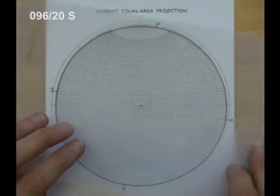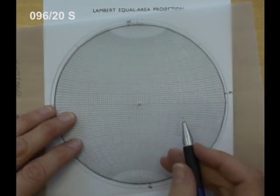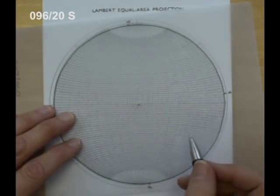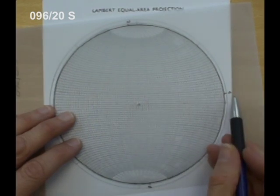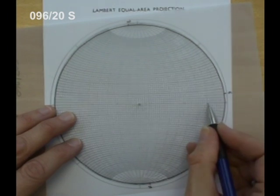We take the strike round to the north on the stereo net. Now the plane dips to the south, so we count the dip in along the equator where we marked on the south side of the tracing paper. So 10, 20.